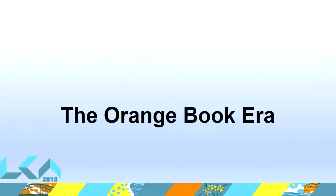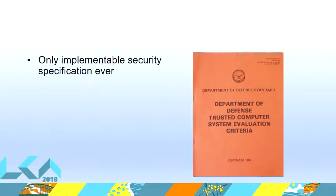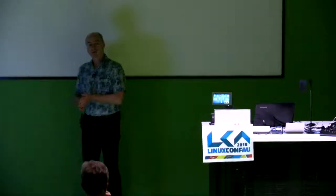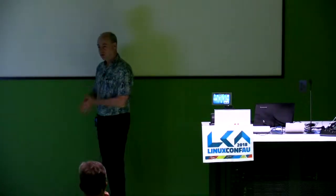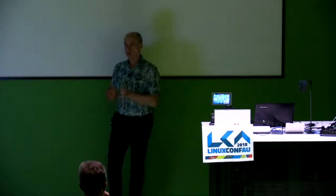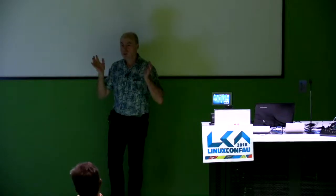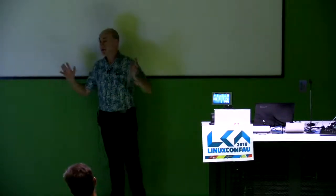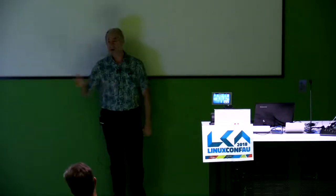Anyone want to guess why they call it the Orange Book? It was printed under a bright orange cover. They put out their set of security criteria under that bright orange cover. It was marvelous because you could actually read this book and understand what the security requirements were — you could actually implement it. It was astonishing. Nobody had ever done that before, and best I can tell, nobody's ever done it since. You see a lot of security requirements come out and you look at them and go 'whoa, glad I didn't step on that.'